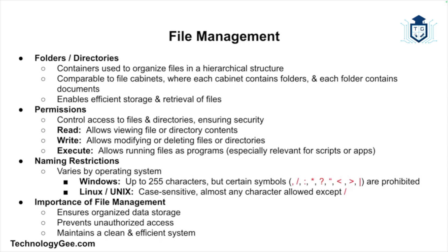Permissions control access to files and directories. The most common permission types include read, which allows viewing the contents of a file or directory; write, which allows modifying or deleting a file or directory; and execute, which allows running a file as a program. In most operating systems, users are granted different permission levels to maintain security.